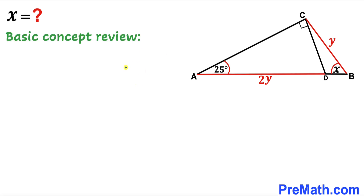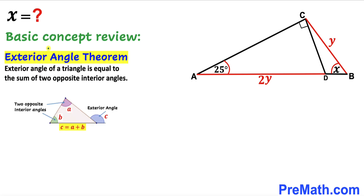Before we proceed, let's recall the exterior angle theorem. According to this theorem, the exterior angle of a triangle is equal to the sum of the two opposite interior angles. As you can see in the diagram, this exterior angle C is equal to angle A plus angle B.